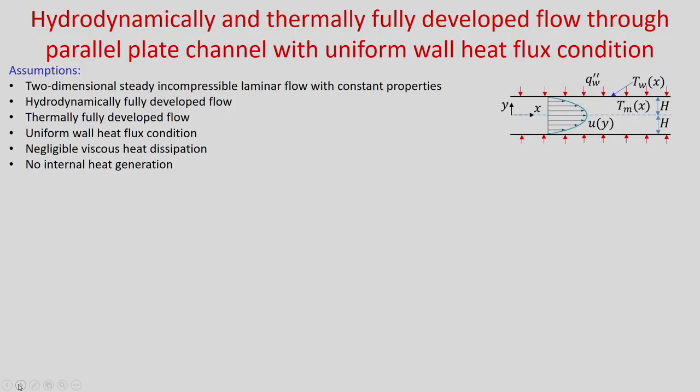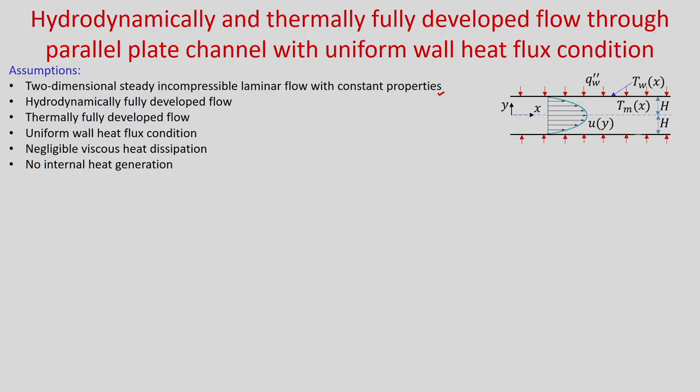First let us consider the assumptions. We will consider two-dimensional steady incompressible laminar flow with constant properties. Two-dimensional means in the third direction it is infinite, so there will be no gradient in that direction. For flow through parallel plate channel, x is the axial direction and y is measured from the centre line. The velocity profile is fully developed and u is a function of y only. Uniform wall heat flux is imposed on both walls, so T_w is a function of x. The two plates are separated by a distance 2h.